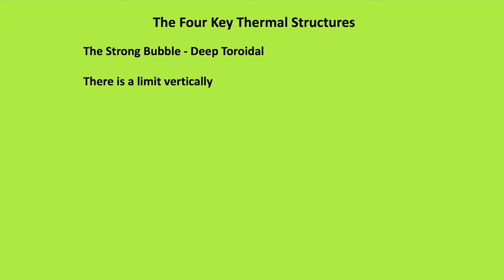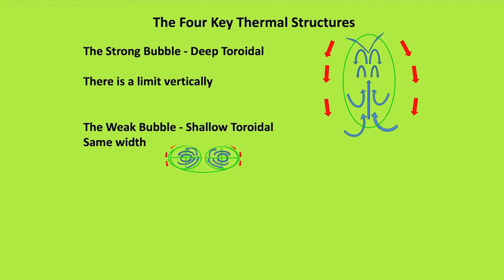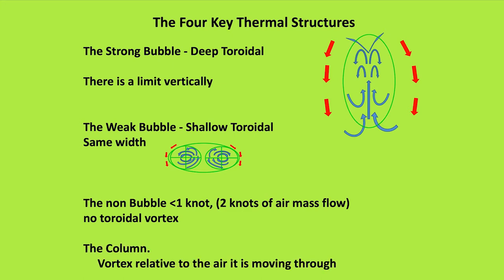The four key thermal structures then. First: the strong bubble with the deep toroidal — there is a limit to how deep this toroid can be. Second: the weak bubble has a shallow toroid but the same width. Third: the non-bubble — less than 1 knot, 2 knots of air mass flow, no toroidal vortex. And finally: the column. The vortex is relative to the air it is moving through, and the column of air itself is rising, driven up by surrounding sinking air.